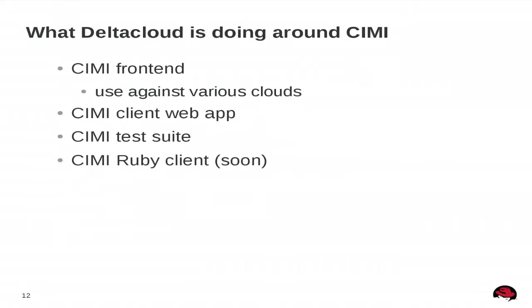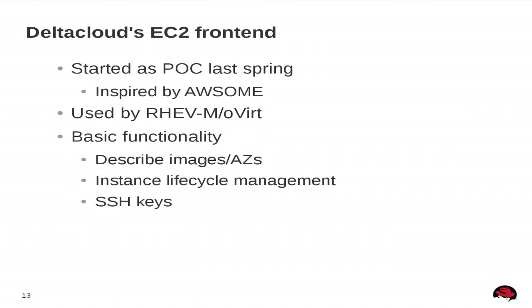The EC2 frontend started as a proof of concept to see how easily another API can be put in front of Delta Cloud. RHEV-M now uses it as their EC2 frontend. The functionality is still somewhat basic — it gives you enough to do lifecycle management, launch instances, and manage SSH keys. There's a lot more that could be exposed, but it's there and can be easily expanded if there's interest. I was amazed by how quickly it came together — about a week — because all the plumbing was already in place.